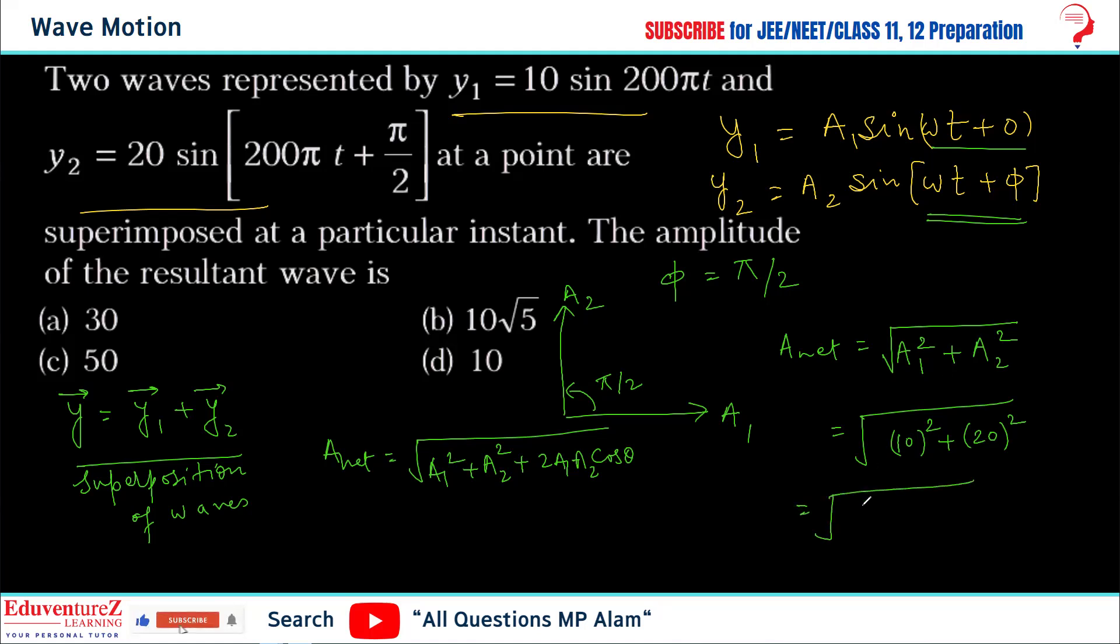So this is 100 plus 400 equals 500. The square root of 500 is 10 times root 5. So the final answer is 10√5. I hope you understood. Thank you so much for watching.